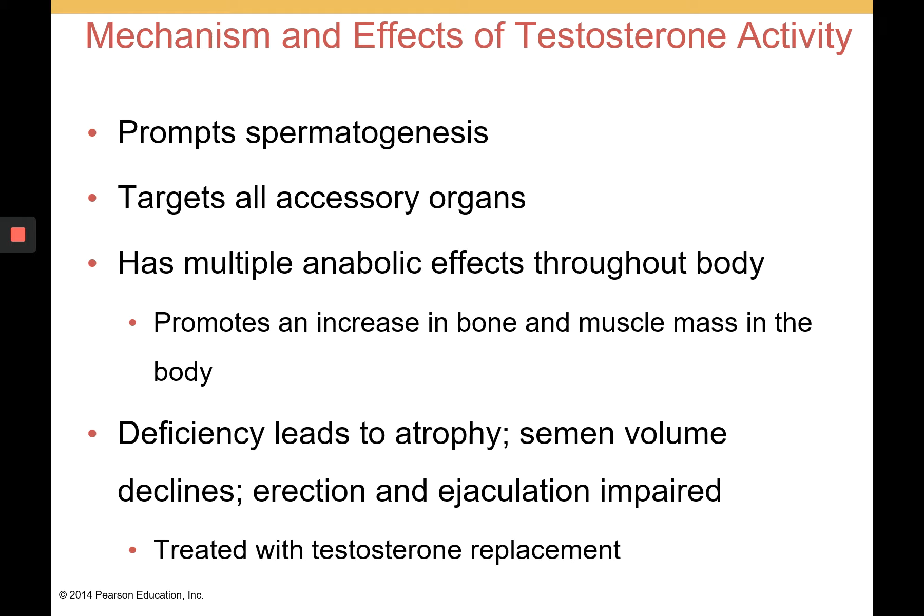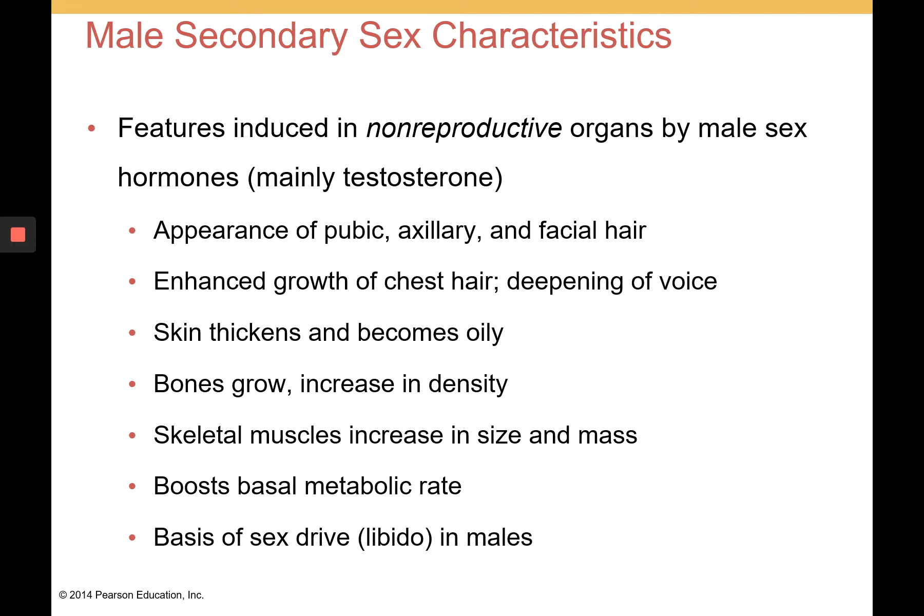A deficiency in testosterone leads to atrophy — semen volume and sperm production decline, and it can impair erection and ejaculation, but is easily treated with testosterone replacement. Male secondary sex characteristics are features induced in non-reproductive organs by male sex hormones, mainly testosterone. These include the appearance of pubic, axillary, and facial hair; enhanced growth of chest hair; deepening of the voice affecting the larynx; thickening and oiliness of the skin, which can produce acne. There are also anabolic effects — increased skeletal muscle and bone mass in density and size — a boosted basal metabolic rate, and testosterone is the basis of the sex drive or libido in males.